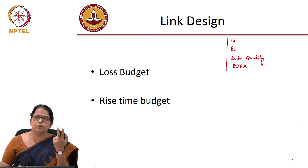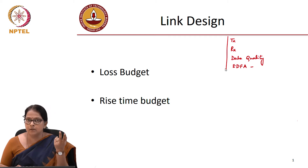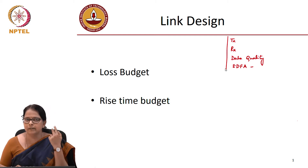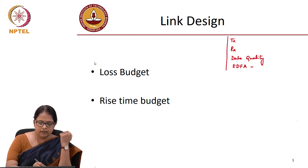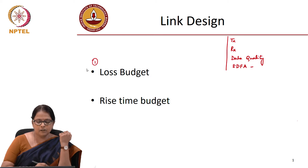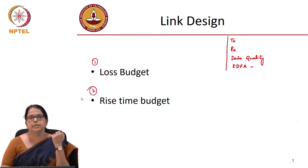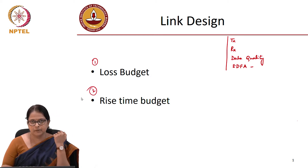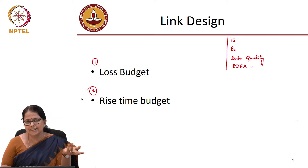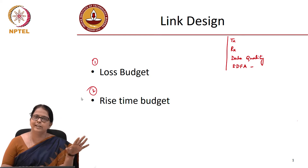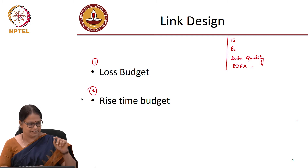The two things which you need to do in sequence when you are designing a link are: one is the loss budgeting, and the second is the rise time budgeting. You do the loss budget, you do the rise time budget, and you are done. That is how the link gets designed.